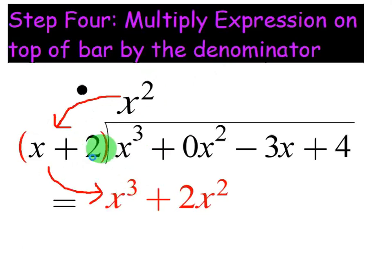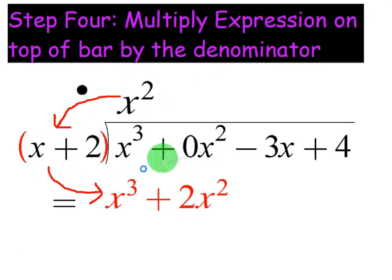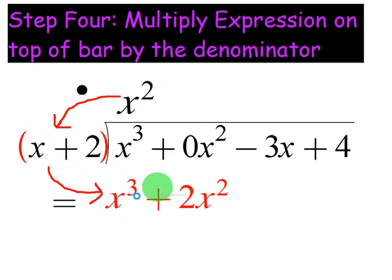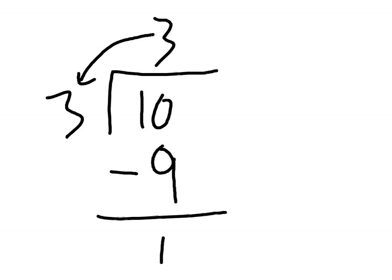You're taking your answer and re-multiplying it by all the expressions in the denominator to get a new expression below. Now we're going to subtract. Make sure you use parentheses when you subtract — just like with numbers, you end up subtracting that to get something down here.